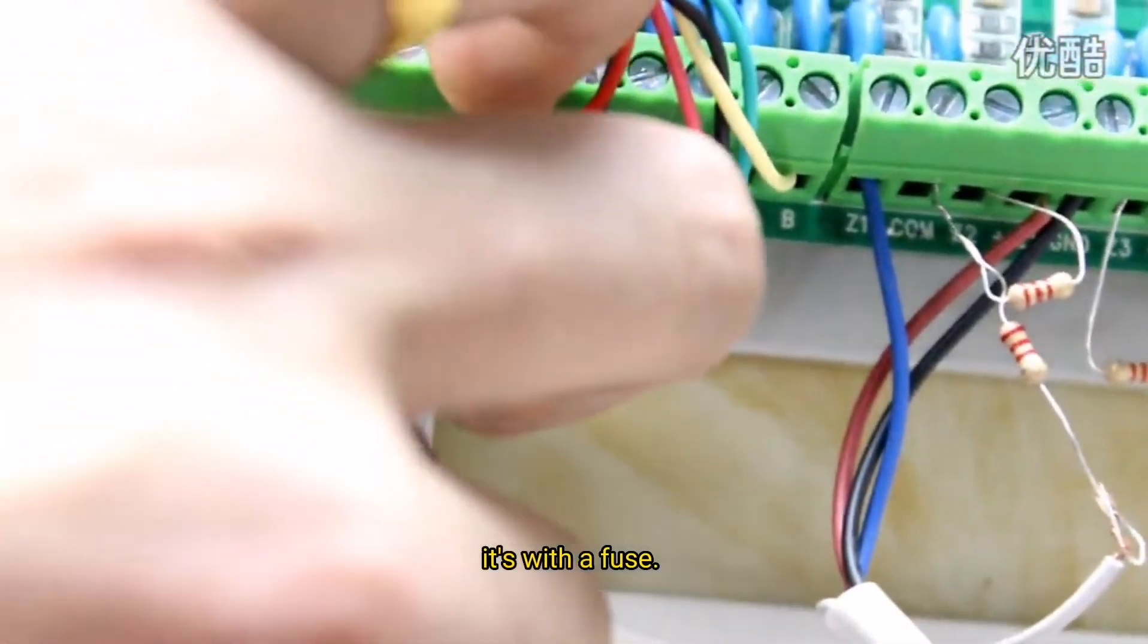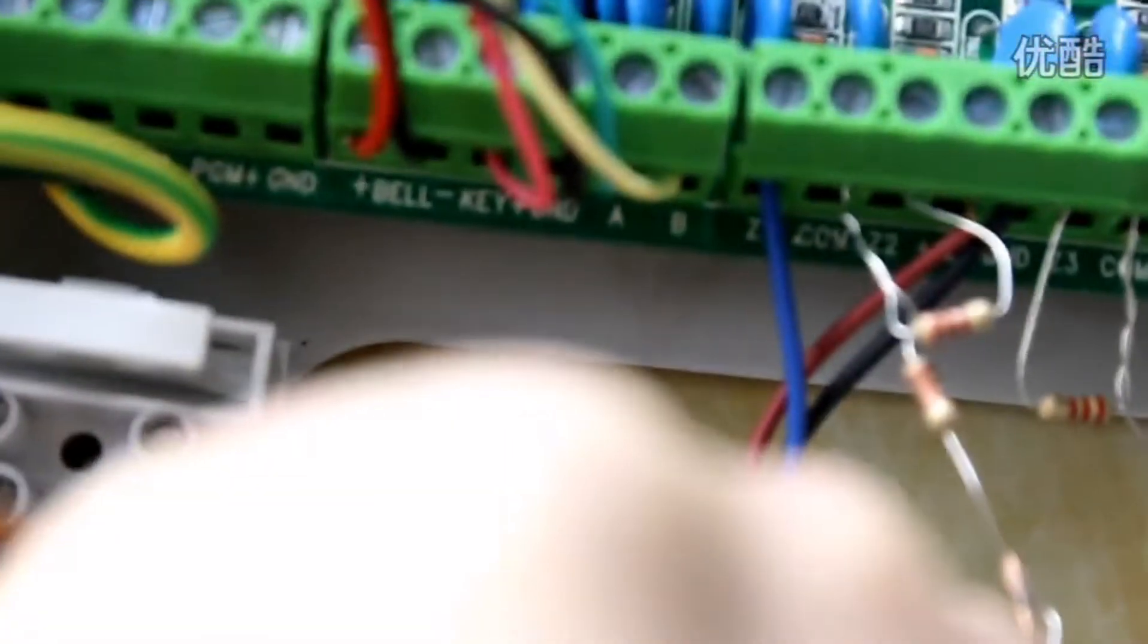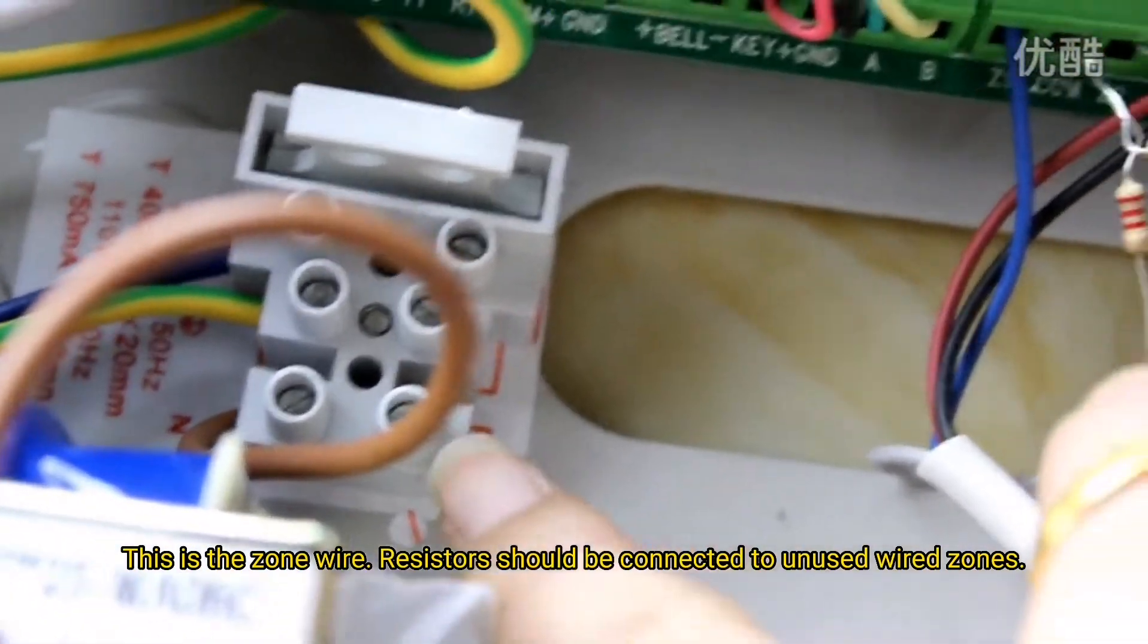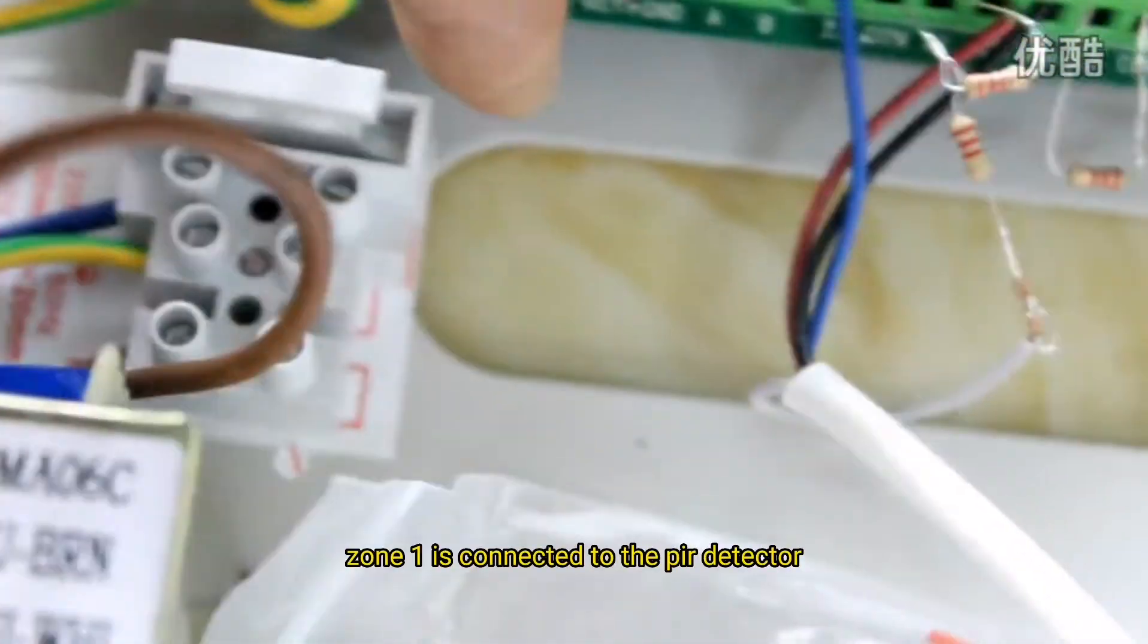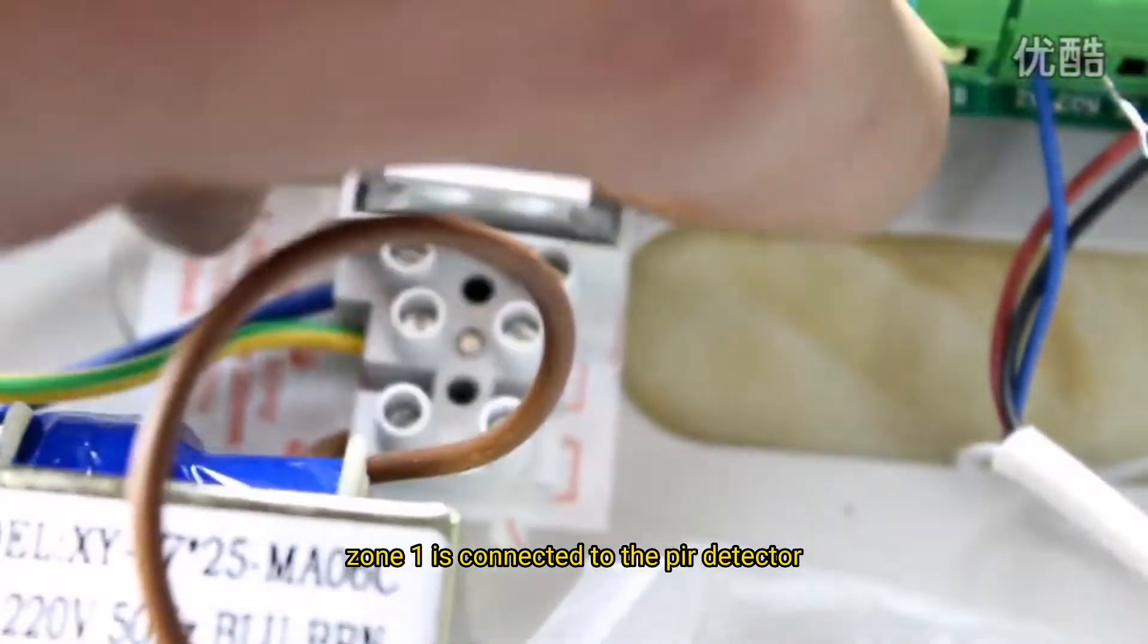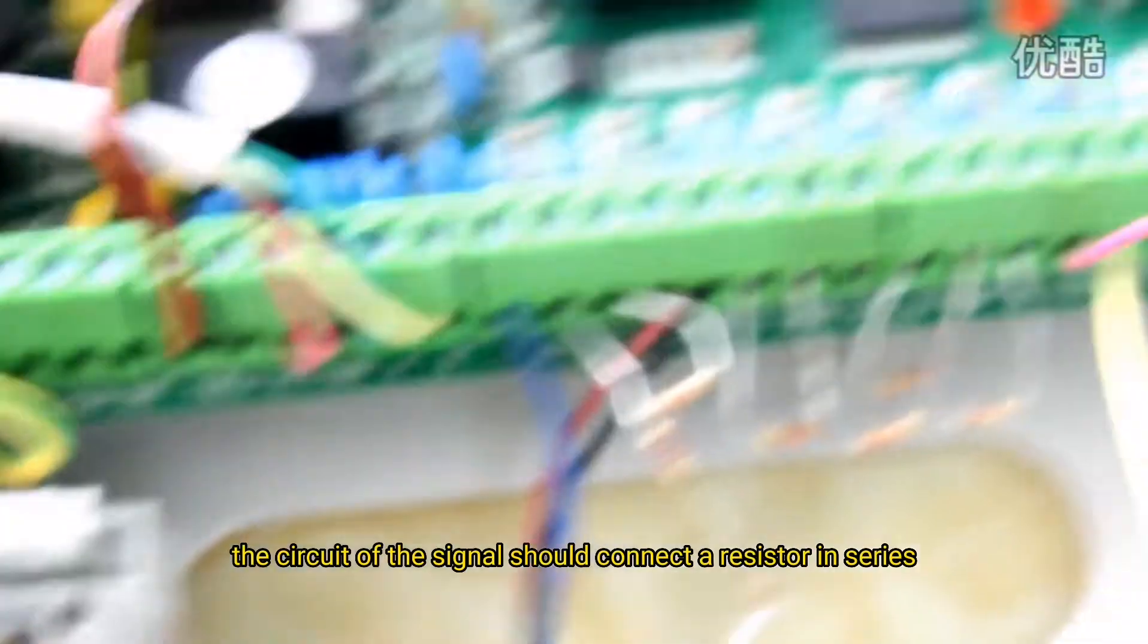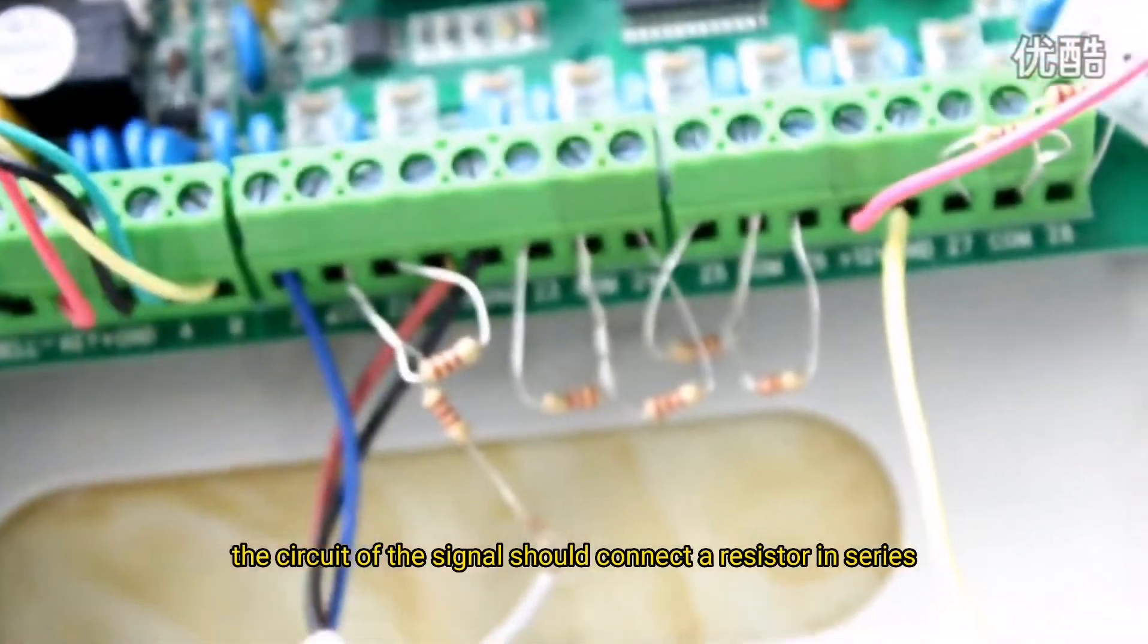This is the zone wire. Resistors should be connected to unused wired zones. Zone 1 is connected to the PIR detector. The circuit of the signal should connect a resistor in series.